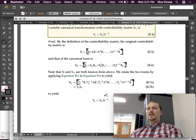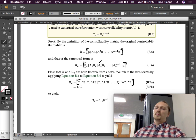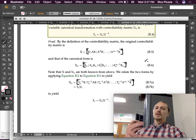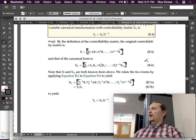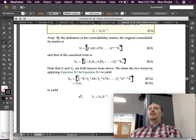So, proof. By the definition of the controllability matrix, the original controllability matrix is this, right? We just saw this definition. So, that's what the controllability matrix of the original system is. And that of the canonical form then, since it has different B matrix and different A matrix, is this. So, those are our two original matrices. We're going to do the old plug and chug proof, which is nice. Note that U and UC are both known from above.